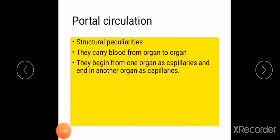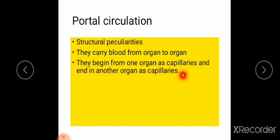Now let us see the structural peculiarities of portal veins. First, they carry blood from organ to organ — portal veins do not reach the heart directly, but carry blood from one organ to another organ. For example, a portal vein carries blood from the small intestine to the liver. Second structural peculiarity: